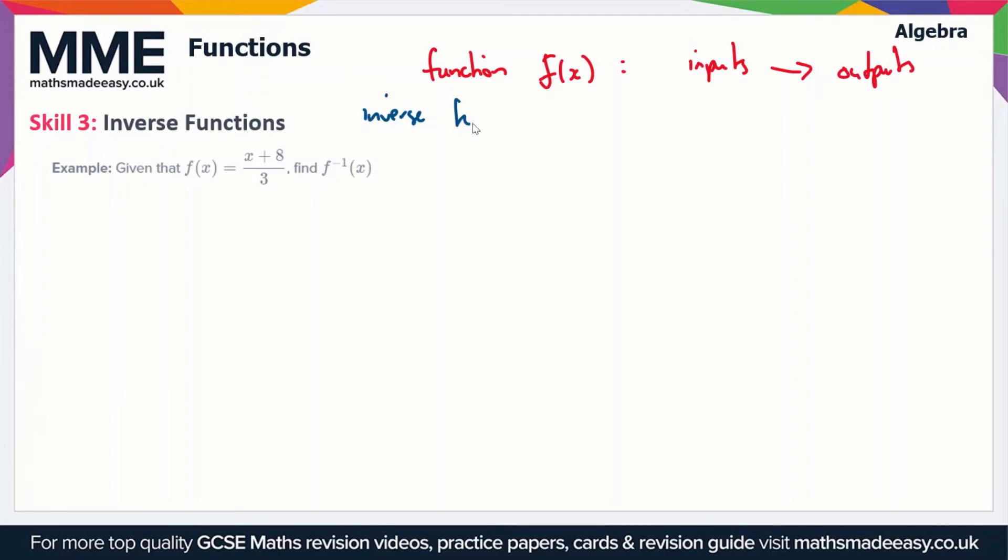So an inverse function we write as f to the power minus 1 of x, and this takes the original outputs and gives back the inputs.